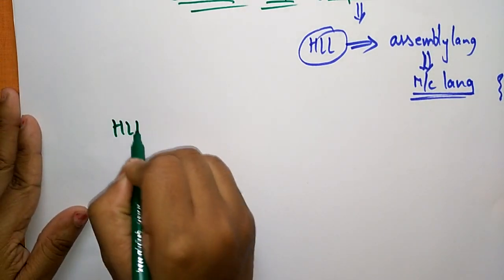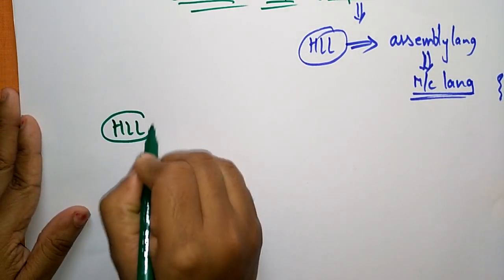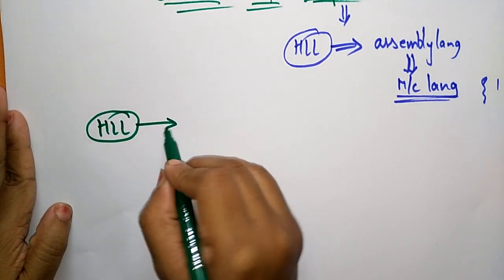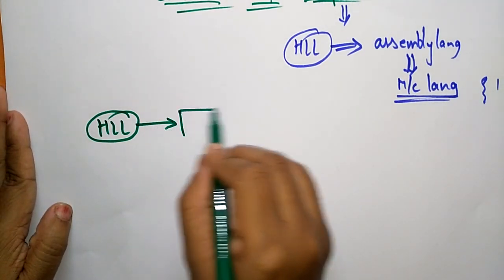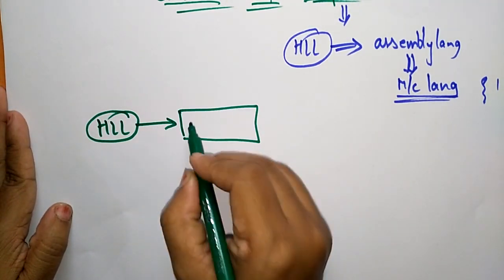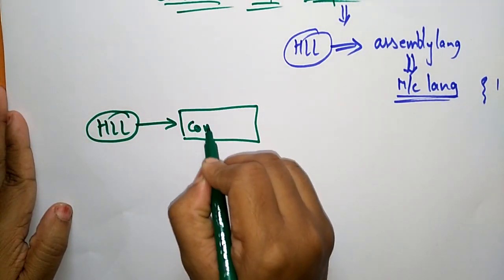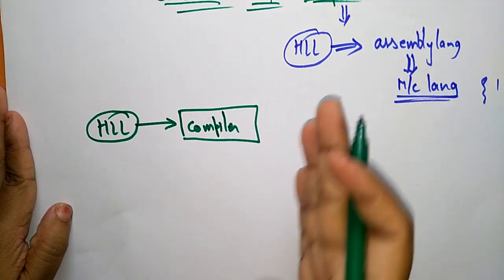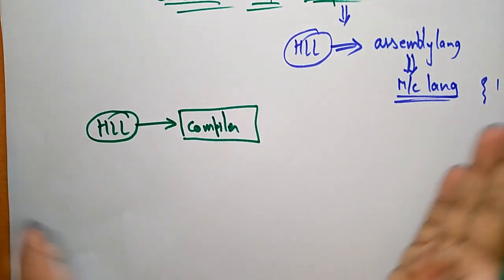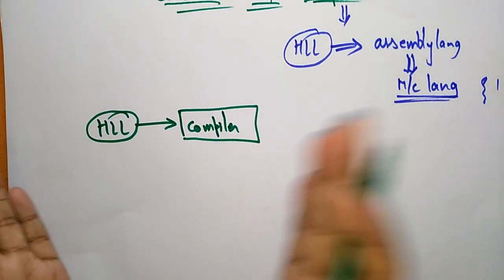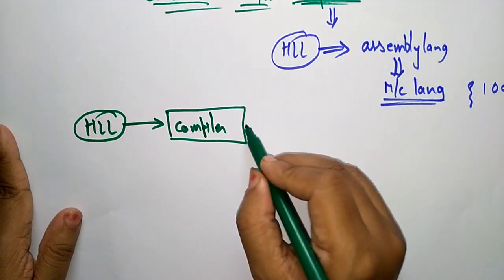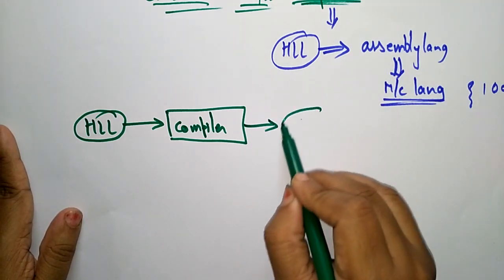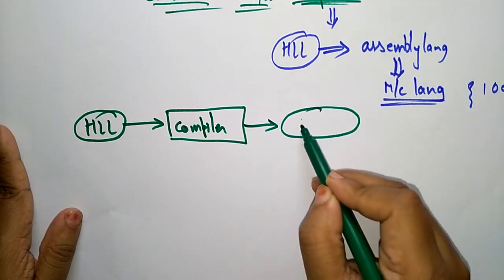So HLL — this is a high level language. The high level language is going to be compiled. With the help of the compiler, the high level language is compiled and it is converted into assembly language.